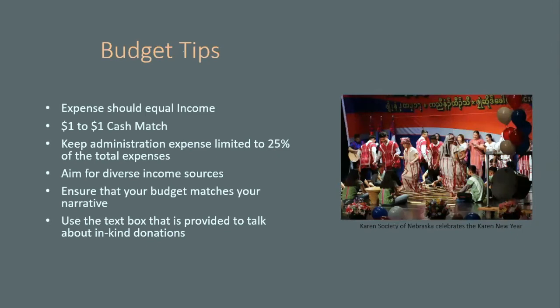A couple of tips — and we're talking about the arts project grant. Things like cash match and the type of expenses will vary from category to category. But for arts project, we're looking for expenses to equal income. So if your project is $4,000, all your income including your NAC request should equal $4,000. We also require a dollar-to-dollar cash match — so for a $4,000 project, $2,000 would be your request to us and $2,000 would be your other income sources combined.